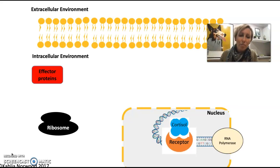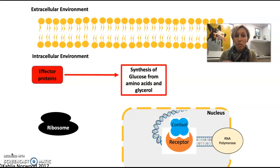Eventually, the effect proteins will be produced, the final protein modifications will occur. And the role in response to cortisol, the role of these effect proteins, is to synthesize glucose from amino acids.